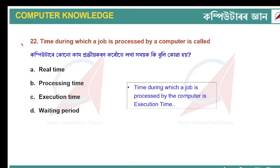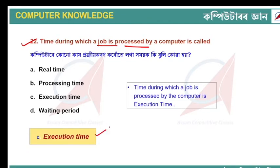The time during which a job is processed by a computer is called what? The answer is 'execution time.' This means the time the computer takes to execute or process a job is called execution time.